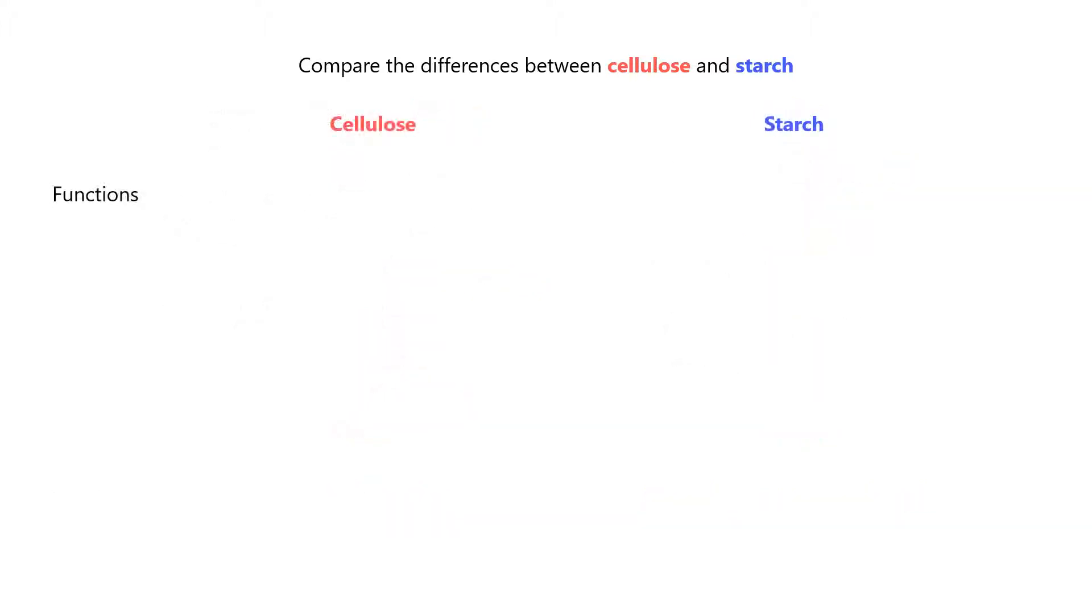Next, let's look at their functions. Let's first look at cellulose. Firstly, cellulose has high tensile strength due to the cross-linking between parallel chains. This gives cellulose stability as a structural material.